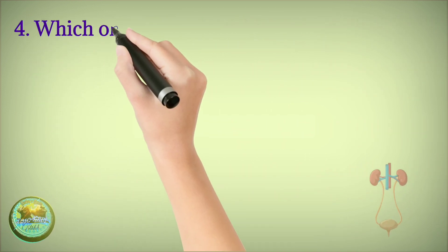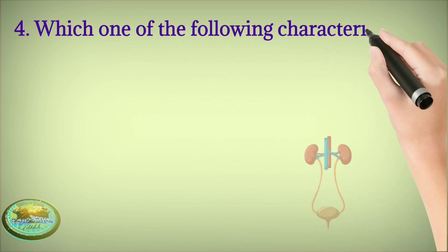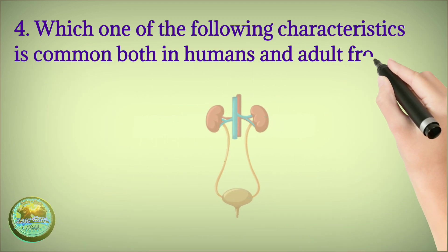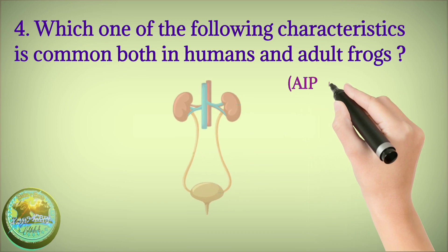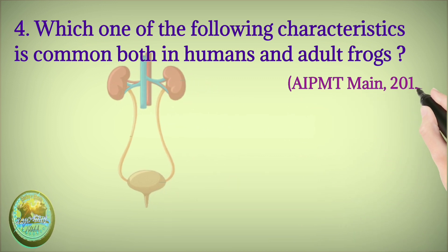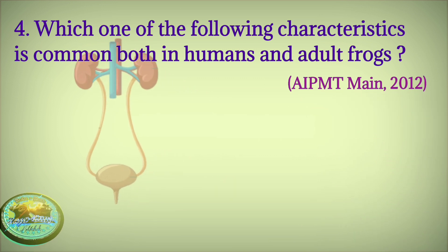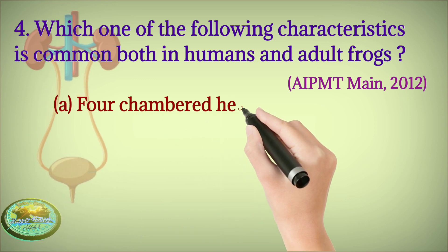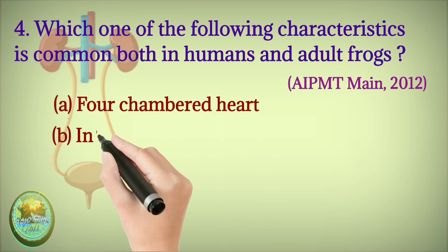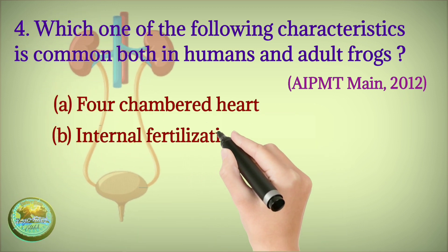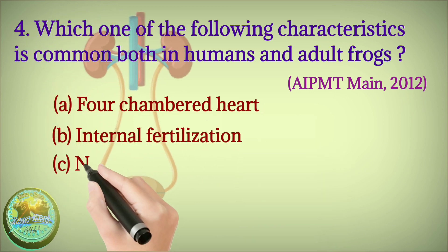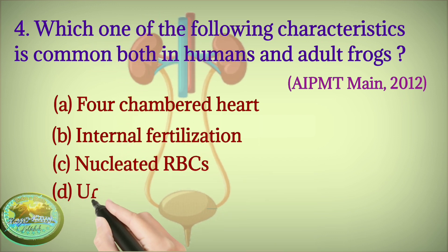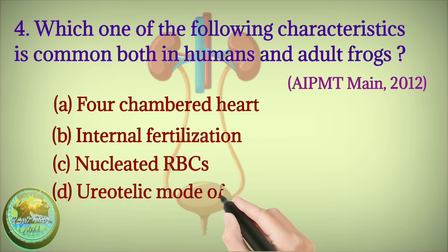Question 4: Which one of the following characteristics is common both in humans and adults frogs? 4-chambered heart, internal fertilization, nucleated RBC, or uricotelic mode of excretion?